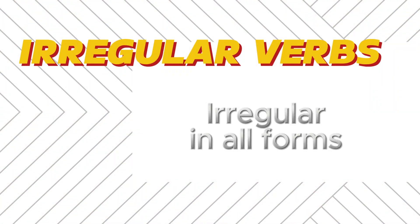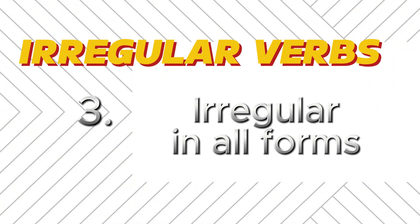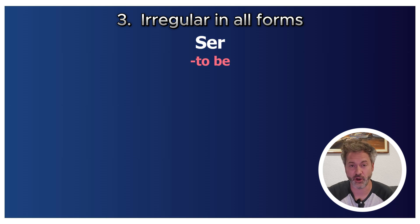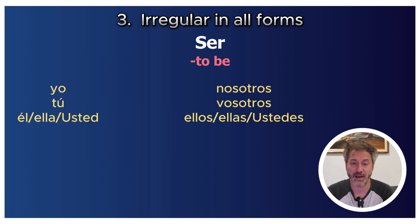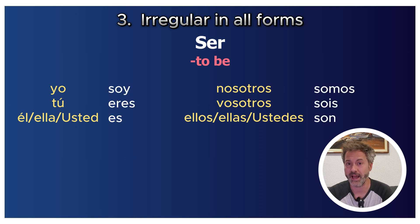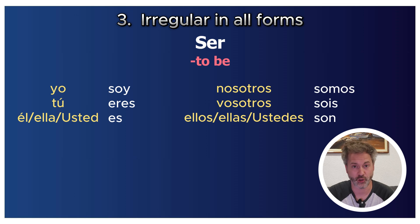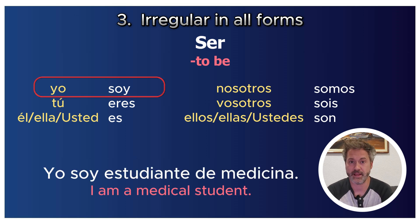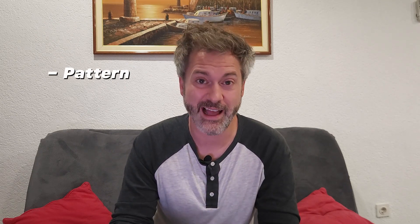Next we'll go through verbs that are irregular in all forms. Take ser: yo soy, tú eres, él/ella/usted es, nosotros somos, vosotros sois, ellos/ellas/ustedes son. For example: 'Yo soy estudiante de medicina' — I'm a medical student. There's nothing we can do about this group — it's just irregular and we have to learn it. However, even though they're irregular in every form, they do follow a pattern within their irregularity.